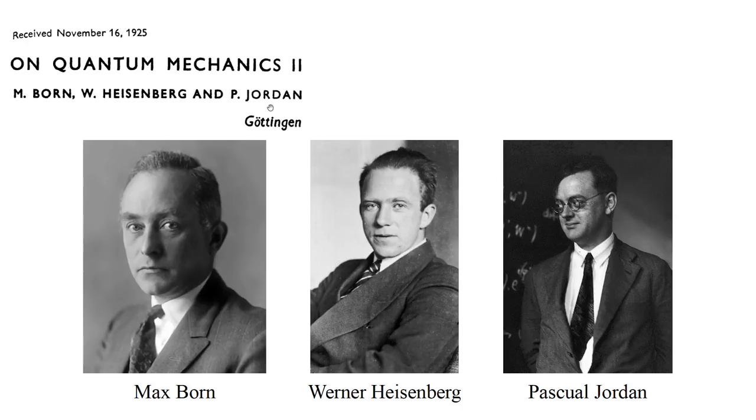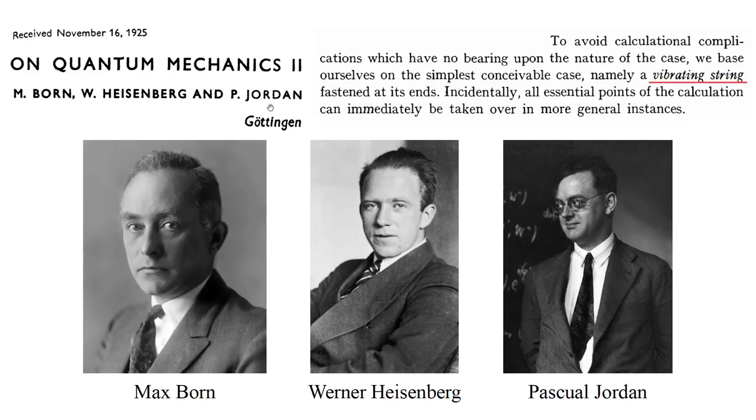When faced with a new and complex problem, physicists often formulate a simplified, even cartoonish version, so they can focus on the essence of the problem without getting sidetracked by details. This is what Born, Heisenberg, and Jordan did in this paper. They wrote: To avoid calculational complications, which have no bearing upon the nature of the case, we base ourselves on the simplest conceivable case, namely, a vibrating string fastened at its ends. Incidentally, all essential points of the calculation can immediately be taken over in more general instances.